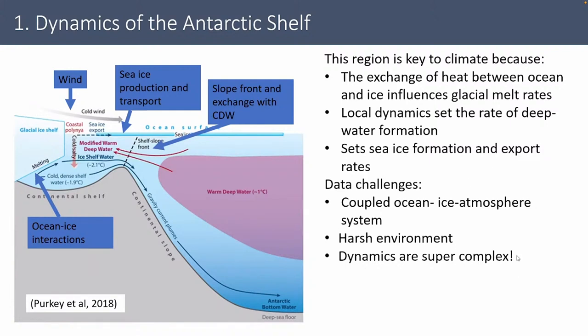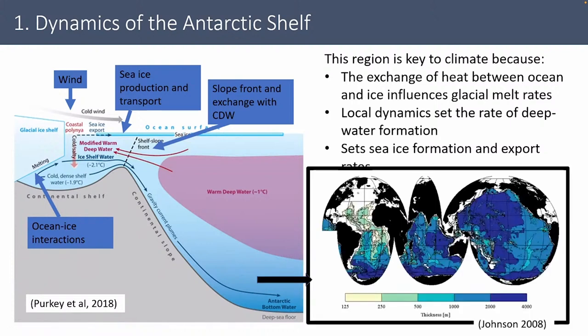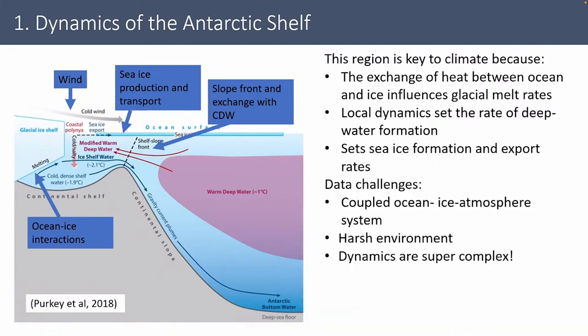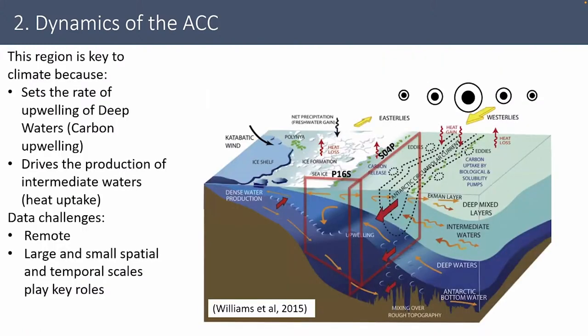We have to think about the wind forcing, the sea ice production and transport, the slope exchange — which involves many different timescales all the way down to tidal timescales and mixing processes — and then the ocean-ice interaction at the front, which is also emerging physics that we're trying to understand. Antarctic Bottom Water formation is the largest volume of water being produced in the global ocean.